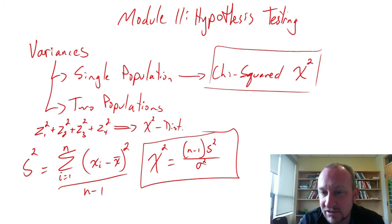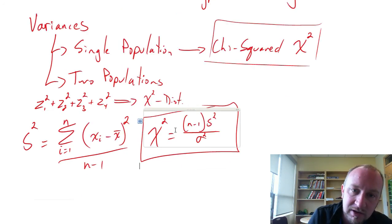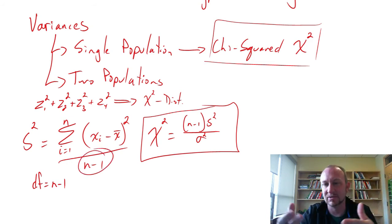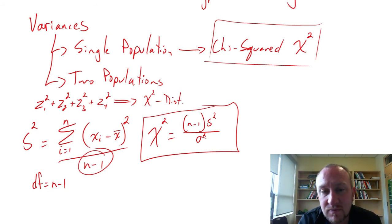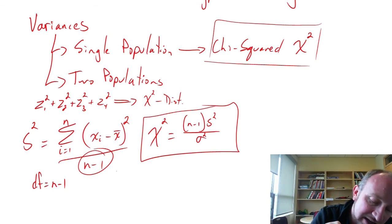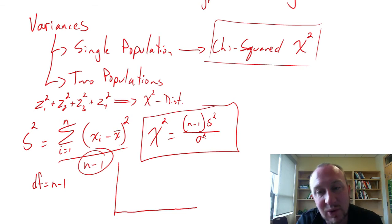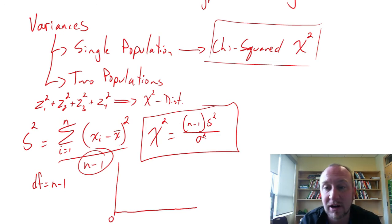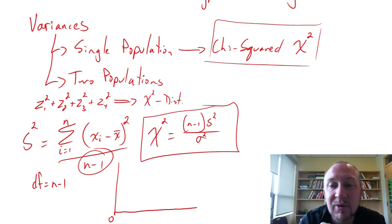The chi-squared distribution is similar to the t distribution in that we still deal with degrees of freedom — n minus 1 — since that's the basis of our estimate of the population variance. Another key difference is that, as a sum of squared normals, there are no negative values. Unlike the t and z distributions which were symmetric around zero with positive and negative halves, here everything is squared.